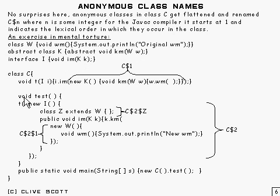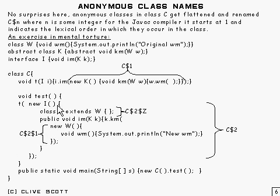Next we've got a method test here. We call t, and t is going to require something of type I — we haven't got one, so we'll make one on the spot with new I. We've got a class here which implements I — it starts there and ends there. So we've made something of type I, and that's going to be c$2.